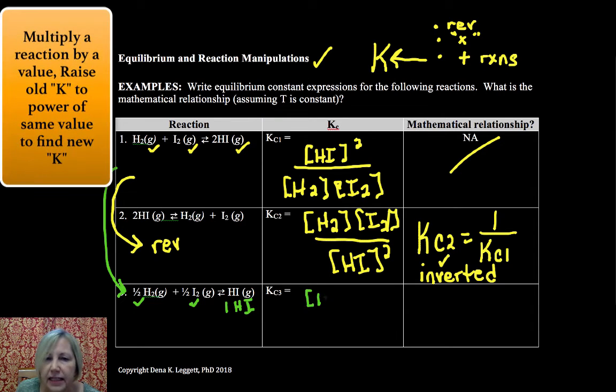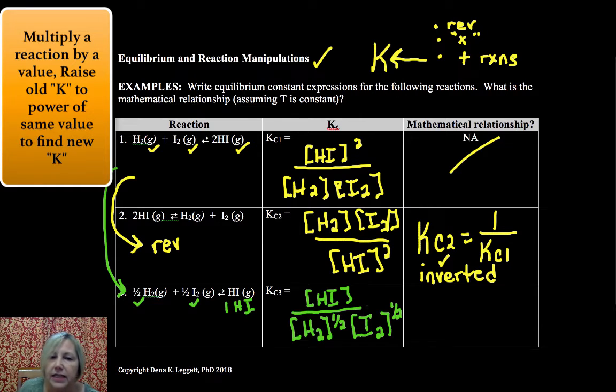So this time I have HI in my numerator over H2 to the one half times I2 to the one half. So you notice this was really two times one half. If you think of it that way as being two times one half equal to one, because we multiplied everything one half.